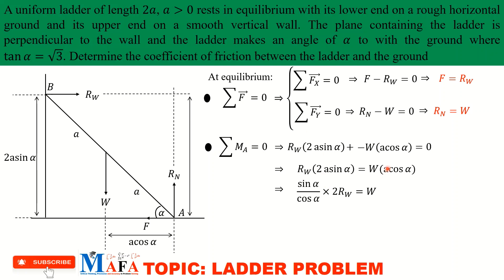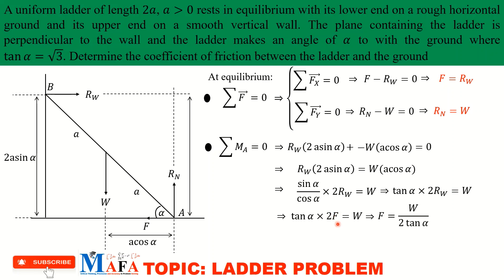Since a > 0 we can cancel the a's (zero divided by zero would be indeterminate, so we confirm a ≠ 0). We get 2·R_w·tan(alpha) = W. Since R_w = F, we replace R_w with F: F = W / (2·tan(alpha)). Given that tan(alpha) = √3, this gives F = W / (2√3).